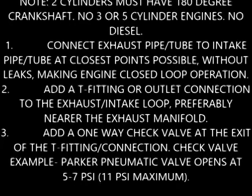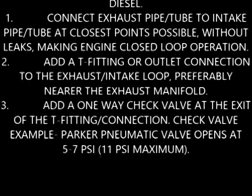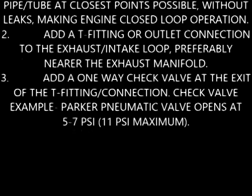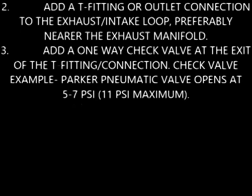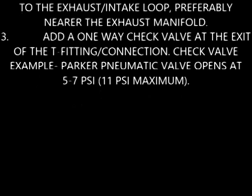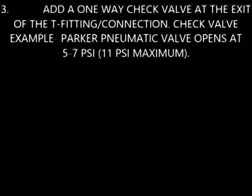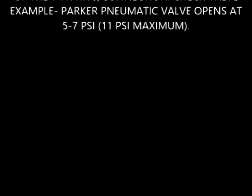Add a T-fitting or outlet connection to the exhaust loop, preferably near the exhaust manifold. Add a one-way check valve at the exit of the T-fitting. For a check valve example: a Parker pneumatic valve that opens at 5 to 7 psi.